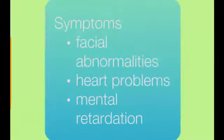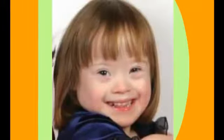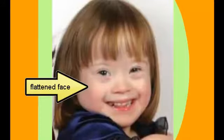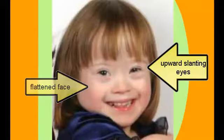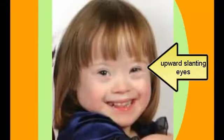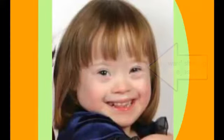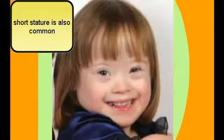Sometimes it's severe enough that they have to live with their parents their whole lives, but sometimes they can live on their own and hold down jobs. Here's a little girl with Down syndrome. You can see her face is fairly flat, her eyes slant upward, and she has a larger forehead. Those are some of the main facial features of people with Down syndrome. They also tend to be short.